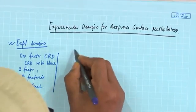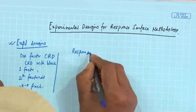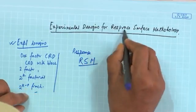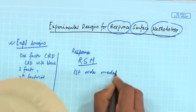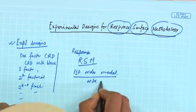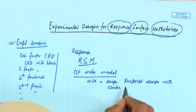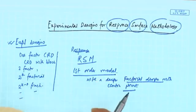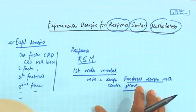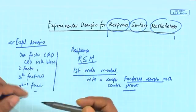Thereafter in the last lecture we started with response surface methodology (RSM). I explained the first order model with a design called factorial design with center point. Today's lecture will discuss those popular experimental designs which are used to fit response surfaces — that is why I have titled it 'experimental design for response surface methodology'.